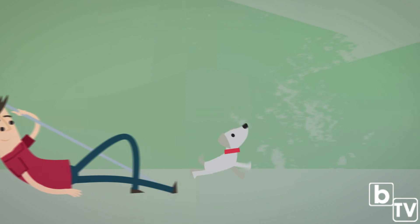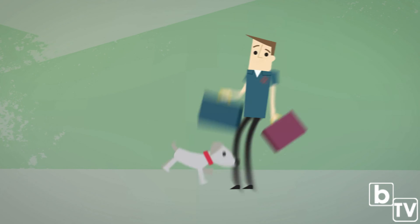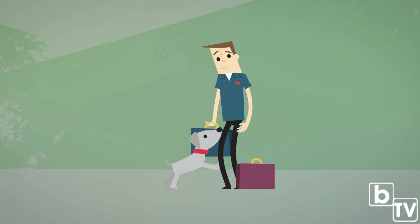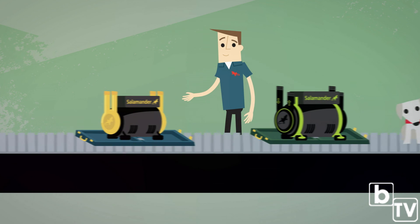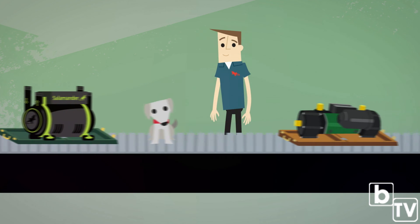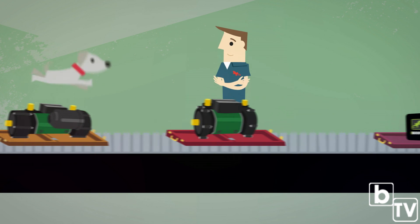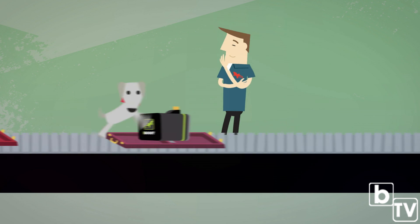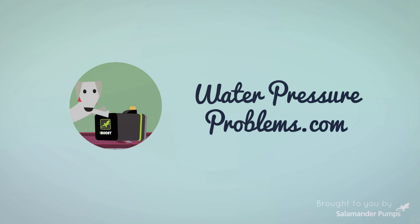The good news is that Salamander produce a range of pumps for all kinds of plumbing systems, be it gravity-fed, combi boiler or an unvented high-pressure system. Use the info on this webpage to identify your system and find the right pump for you.